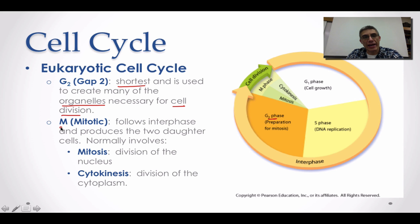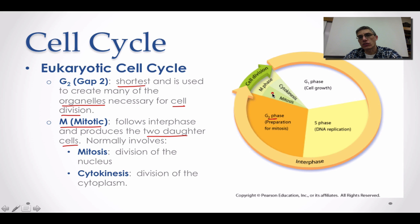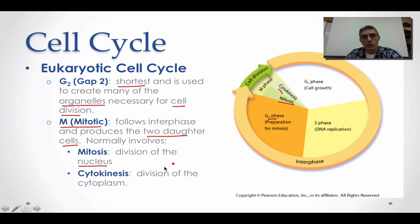The M phase follows interphase and is where the production of two brand new daughter cells actually occurs. The M phase is divided into two parts: the first is mitosis, which is the actual division of the nucleus; the second is cytokinesis, which is the final division of the cytoplasm. This is the part we'll focus heavily on in our second screencast.